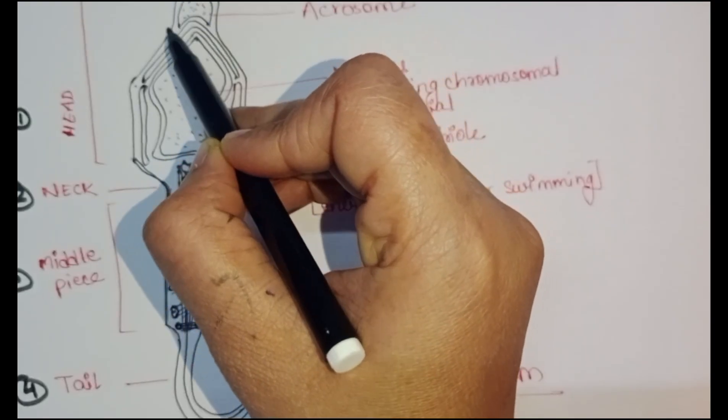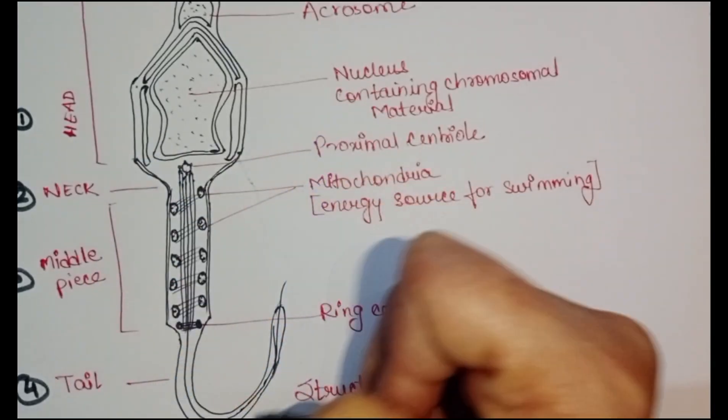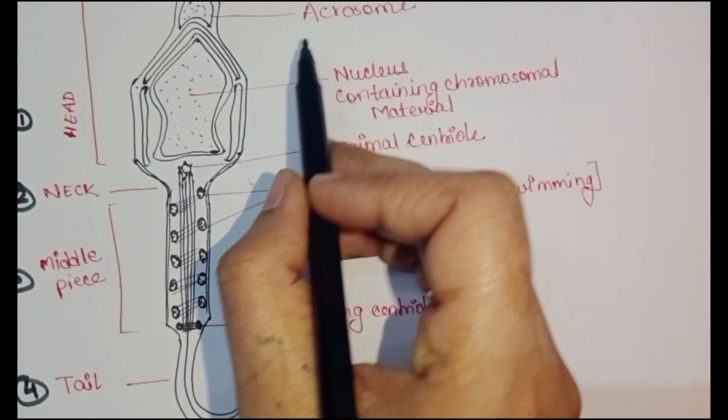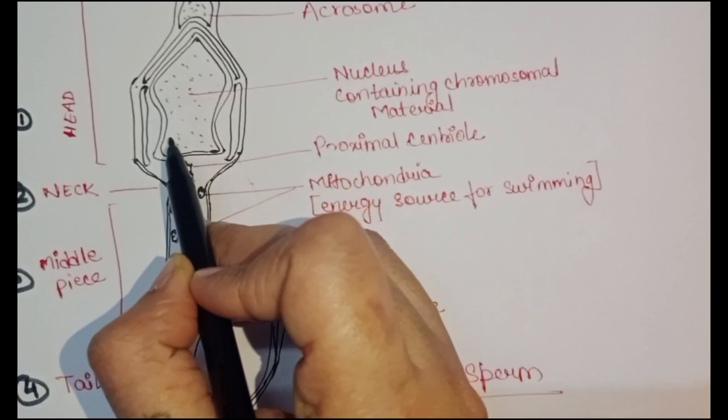You can see this plasma membrane envelops the whole body of the sperm, and the sperm head contains an elongated haploid nucleus.